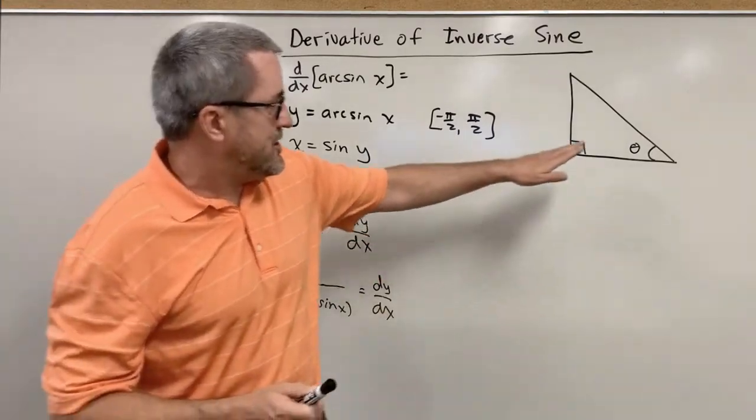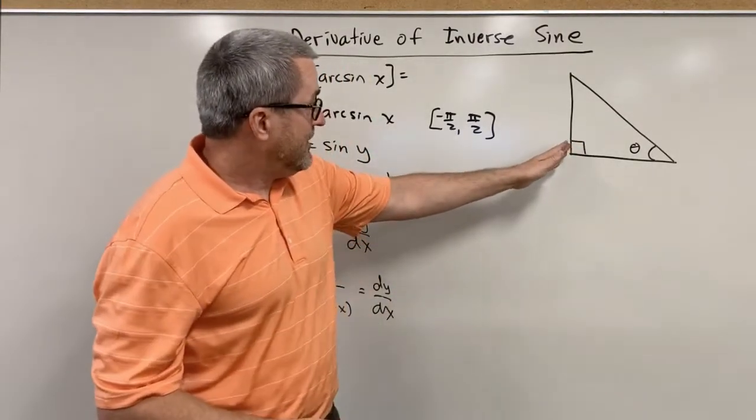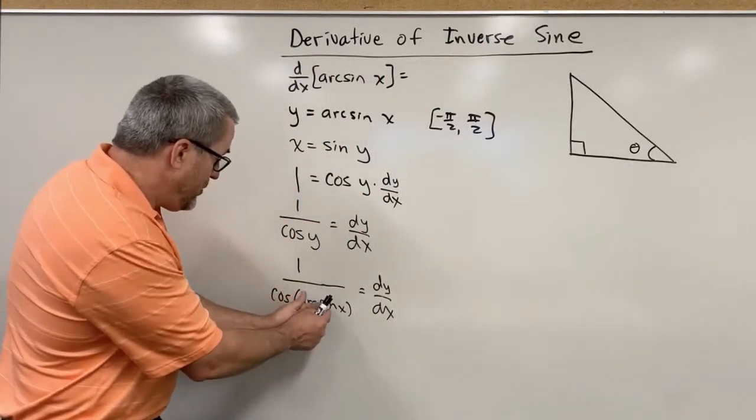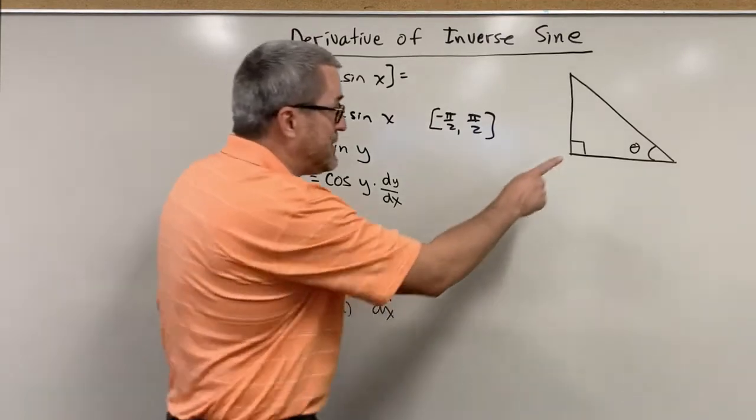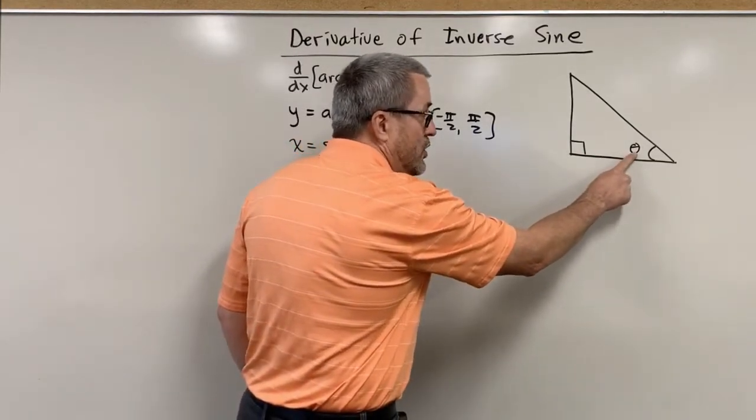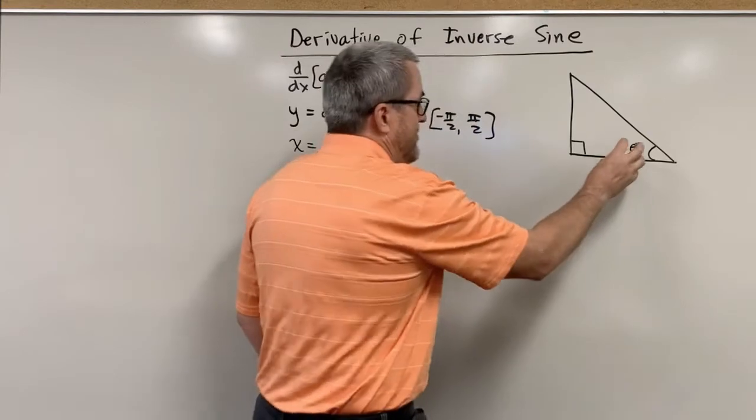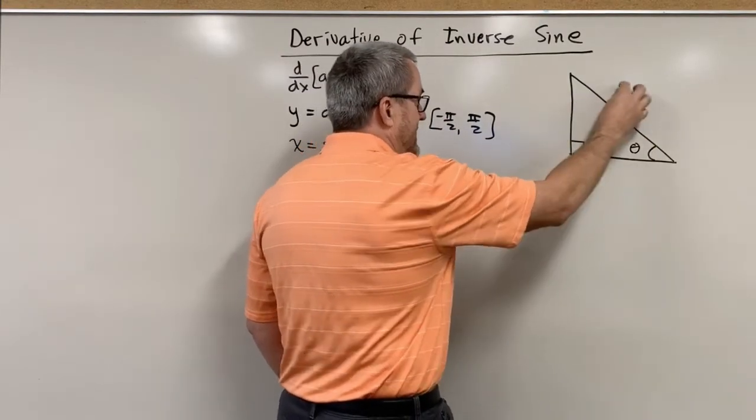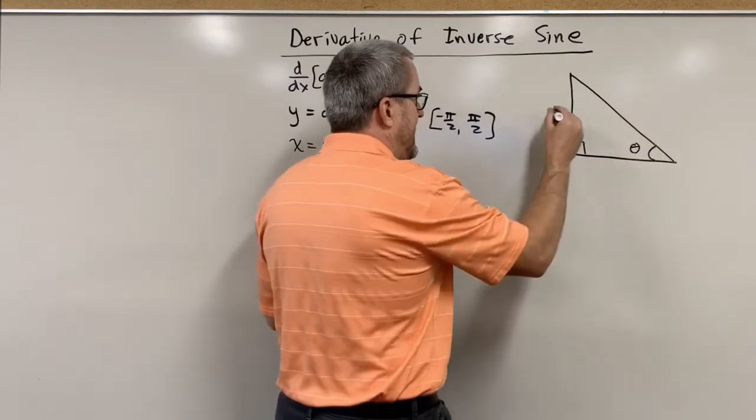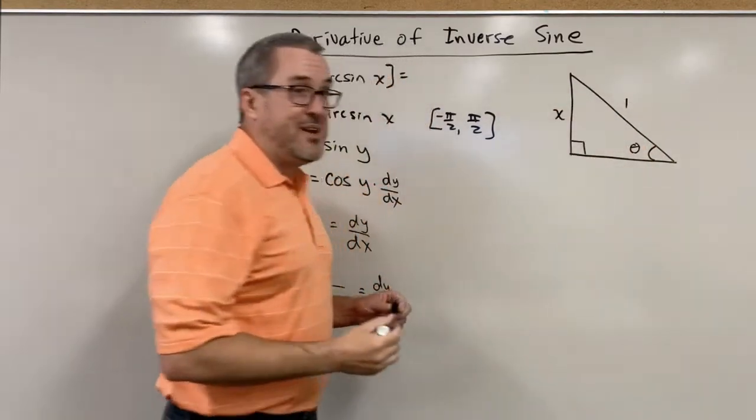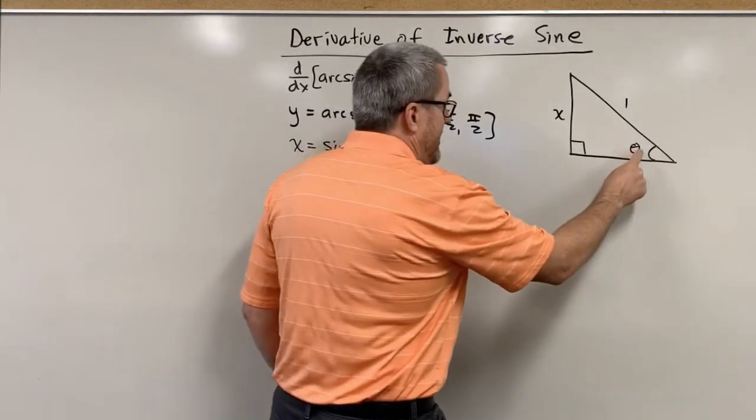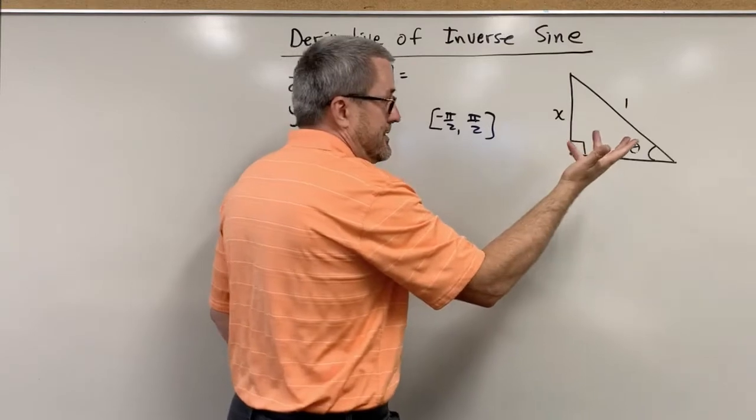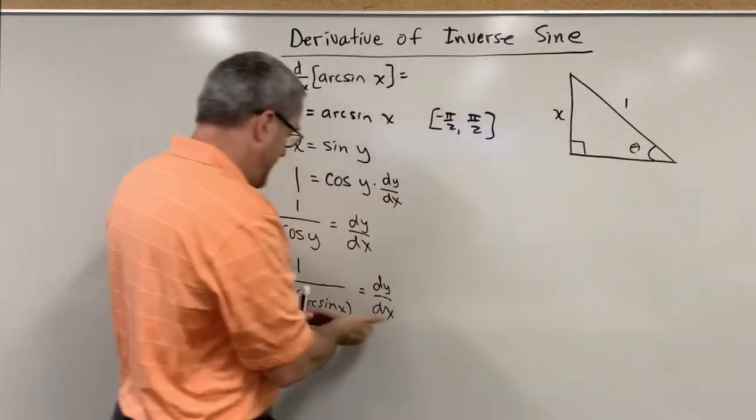And to do the simplification, we're going to use a visual. We're going to use a right triangle that has a particular angle of theta because this says the angle whose sine is x. Let's suppose this is the angle whose sine is x. Now sine is the ratio of this opposite side to the hypotenuse. And if that ratio was x, we could label this triangle as shown. The sine of theta is x over 1 or just x. So here's an angle whose sine is x.